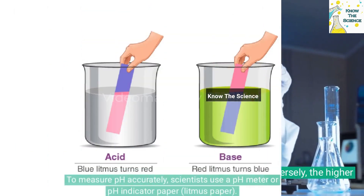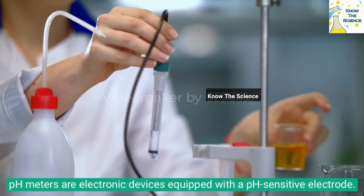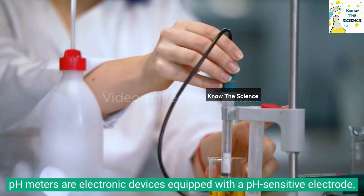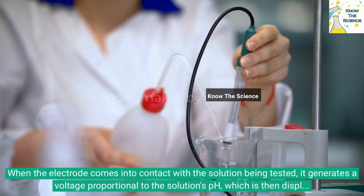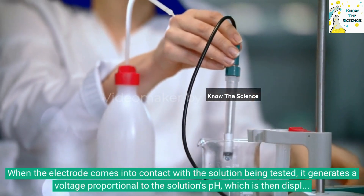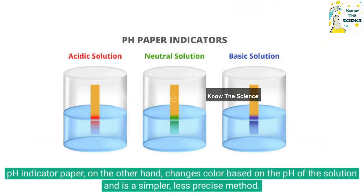To measure pH accurately, scientists use a pH meter or pH indicator paper such as litmus paper. pH meters are electronic devices equipped with a pH-sensitive electrode; when the electrode contacts the solution being tested, it generates a voltage proportional to the solution's pH, which is displayed on the meter. pH indicator paper changes color based on the pH of the solution and is a simpler, less precise method.